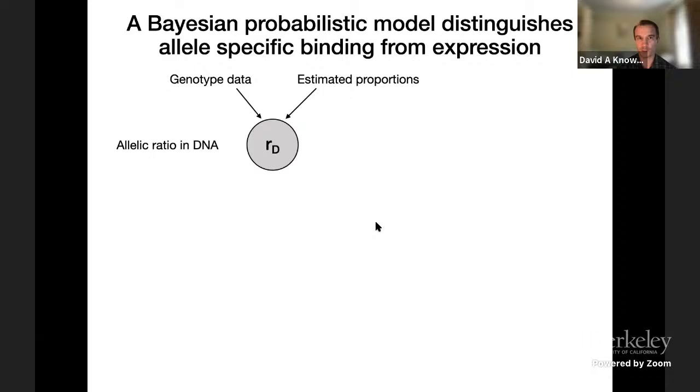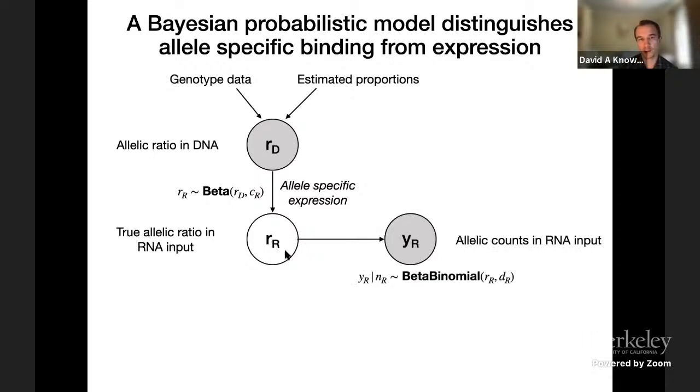The main challenge in analyzing this data is that we want to distinguish allele-specific expression effects from allele-specific binding of the RBP. The way we do this is in a Bayesian probabilistic model. From those estimated proportions, those betas, and the genotype data that we have for the lines, we have what we think is a pretty accurate estimate of the allelic ratio for the two alleles for each SNP at the DNA level. Then we model the unobserved true allelic ratio in the RNA input as being beta-distributed with mean equal to the allelic ratio in the DNA and then some concentration parameter which controls how different they're going to be globally. This is to model allele-specific expression, so is one allele transcribed more than the other, or it could be effect on decay rate as well. The data that we have that's informative about this allelic ratio are the allelic counts in the RNA input. We model those as being beta-binomial distributed with mean equal to this r and a dispersion parameter d.